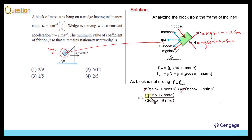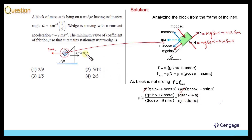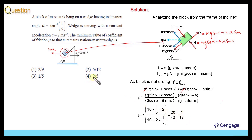If we take cos α as common, in the numerator we will have G tan α, and in the denominator we will have A tan α. This is the final calculation. Now we can put the value of tan α = 1/5, G = 10 m/s², and A = 2 m/s². After substituting the values, we will get this value as 20 divided by 48, which simplifies to 5/12. This means option number 2 is the correct option.